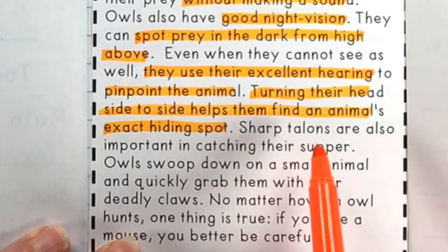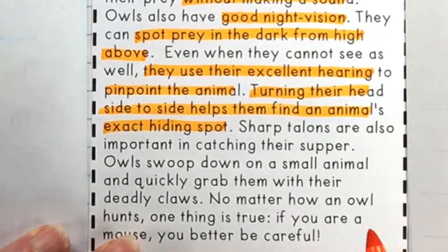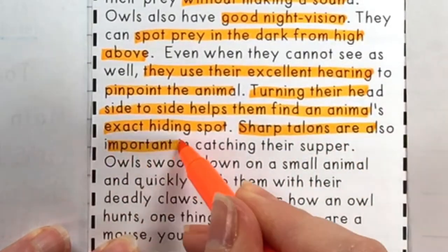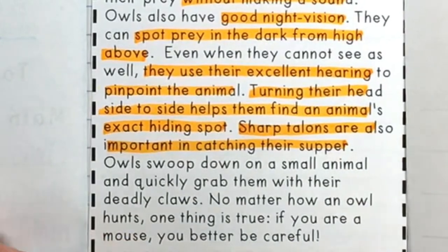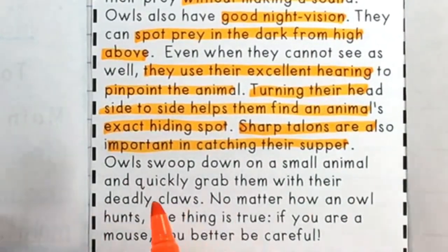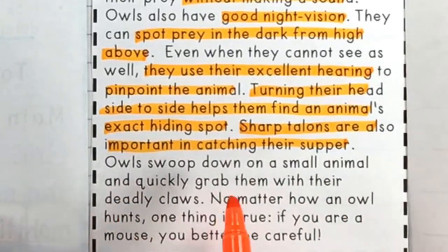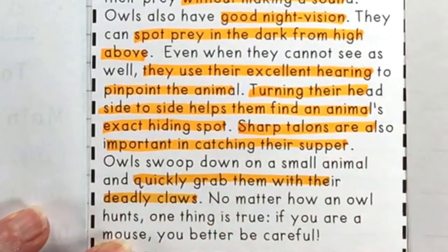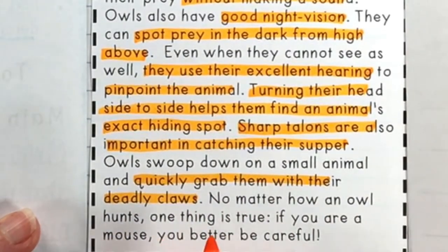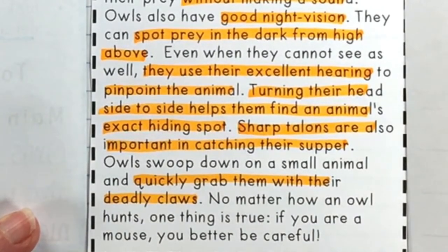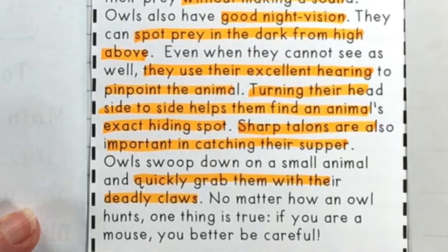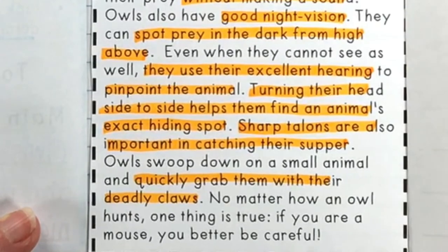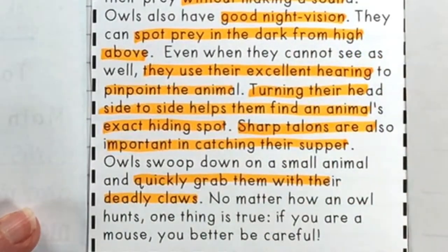Sharp talons are also important in catching their supper. They've got to have these sharp talons because they wouldn't actually be able to catch the animal without them. Owls swoop down on an animal and quickly grab them with their deadly claws before the animal can get away. The final sentence — 'if you are a mouse, you better be careful' — is just wrapping up the paragraph, saying owls are very good hunters and small animals had better be wary.